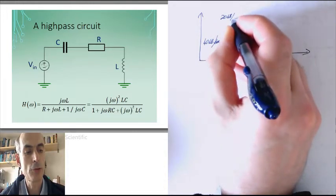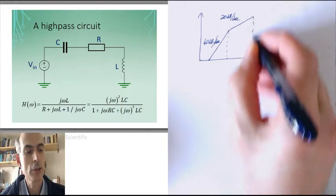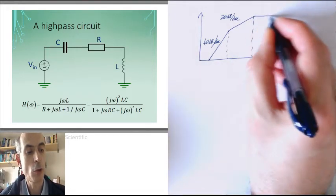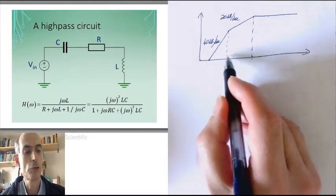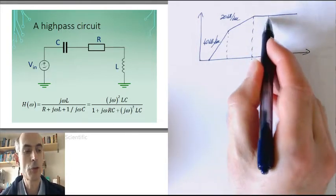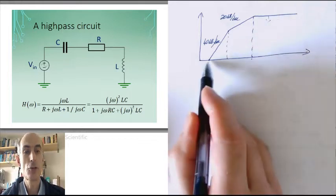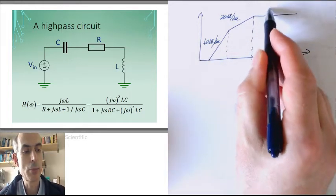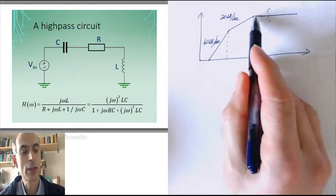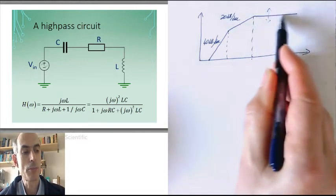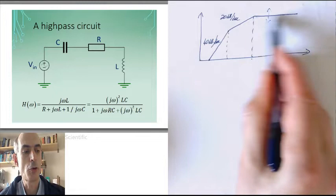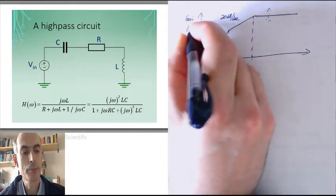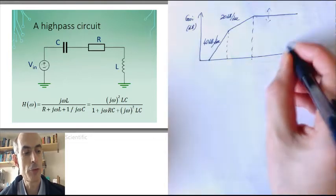Until we get to the second break frequency. And then we would just be going straight, because we've now got two poles pushing us down by 20 dB per decade each, and two zeros at zero hertz pushing us up by 20 dB per decade each. They would cancel out, and we would just get a flat frequency response from then on. And that would be the Bode approximation of the frequency response.